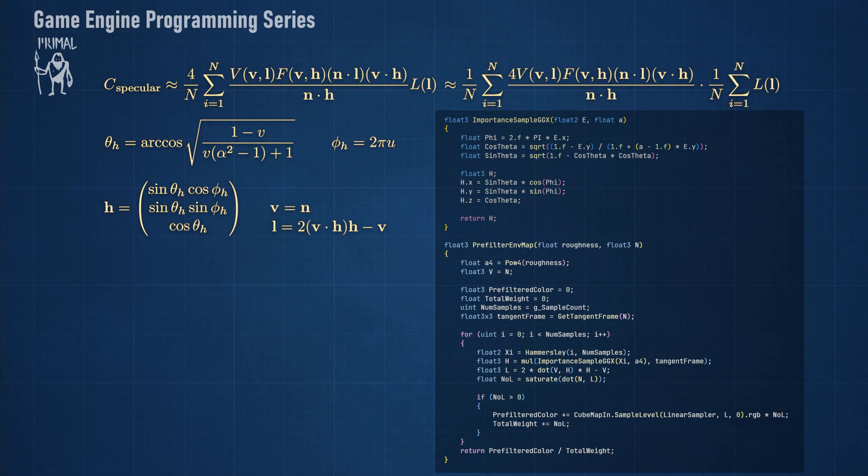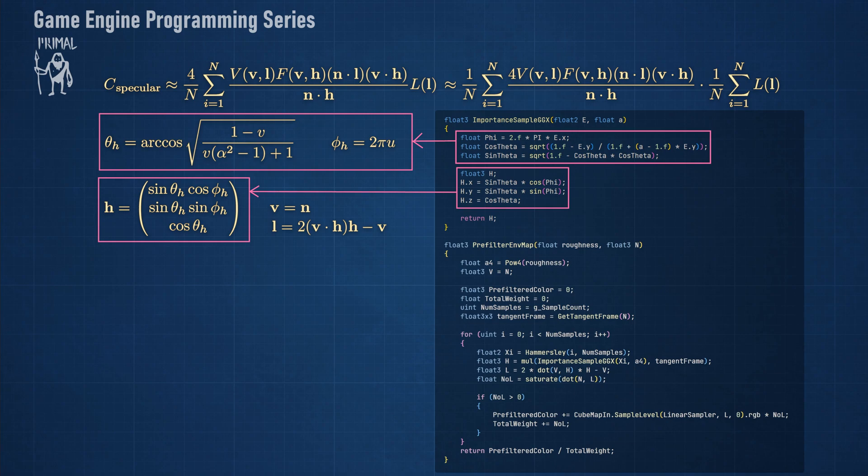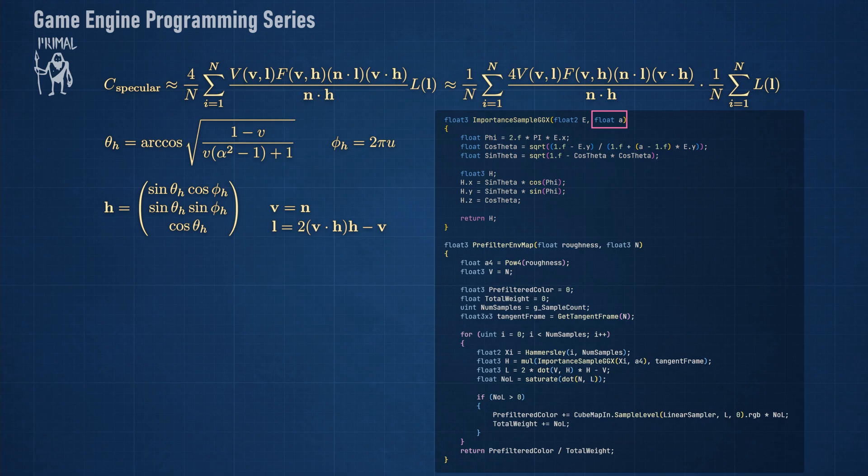Implementing this in shader code is now fairly simple. We have a function that constructs a halfway vector from random values and the roughness. Parameter a is the fourth power of the perceptual roughness.